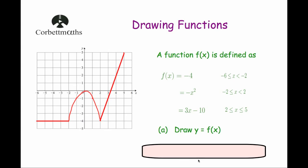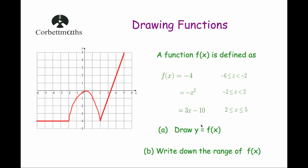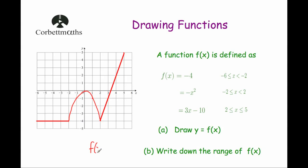For part b we write down the range. The heights of this function go between negative 4 and 5, and it does reach both of those values. So: f of x is bigger than or equal to negative 4 but less than or equal to 5.